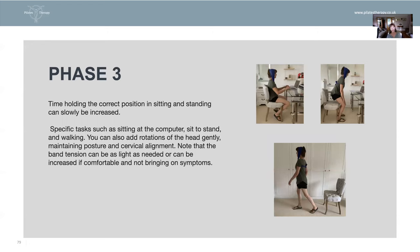Phase three continues with the band and brings things into more functional movements — sitting at a desk, going from sit to stand, squatting, keeping the neck posture so they're not shearing the head forward as they come up from sitting, and then taking a step forward. Keep the clini band on and maintain the sense of lifting up into it during these movements and tasks such as working at a desk, where they may fall into a position that shears the cervical spine. None of these things should be bringing on symptoms. If they do get symptoms, go back a step and keep the progressions very graded.